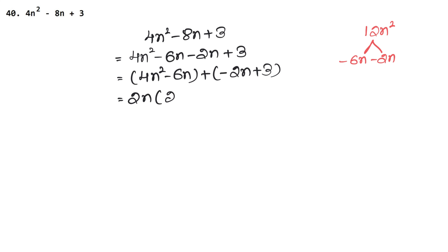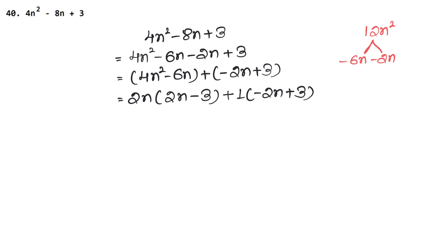2 times 2 is 4, so 2n is common giving us 2n minus 3. In the second bracket, since we need minus 2n plus 3, we take minus sign as common and multiply through. So we get 2n times 2n minus 3, giving us the factorized form.